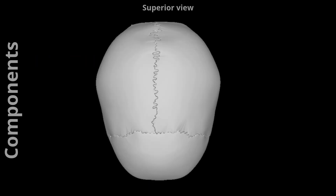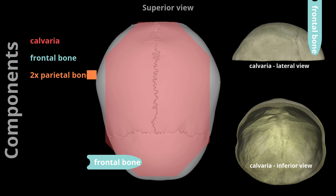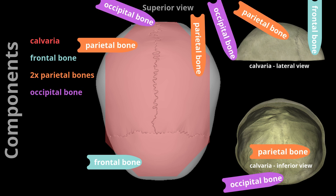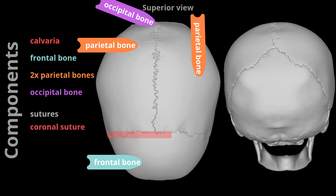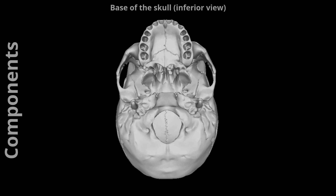Superior view: From above, we can see the ellipsoid-shaped part of the skull called the calvaria. It is formed by four bones — the frontal bone, the two parietal bones, and the occipital bone. These bones articulate through three sutures: the coronal suture, between the frontal and parietal bones; the lambdoid suture, between the occipital and parietal bones; and the sagittal suture, between the two parietal bones.